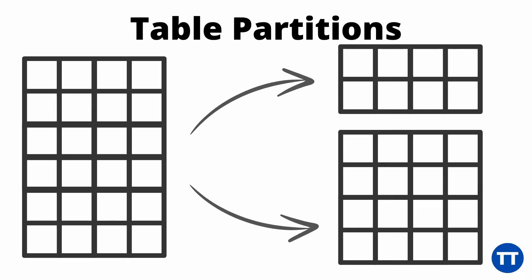So what are table partitions? When we partition a table, we essentially split one table into several smaller tables, and we split them by rows. So some of the rows go to one subtable, some of the rows go to another table, and some of the rows go to yet another table.